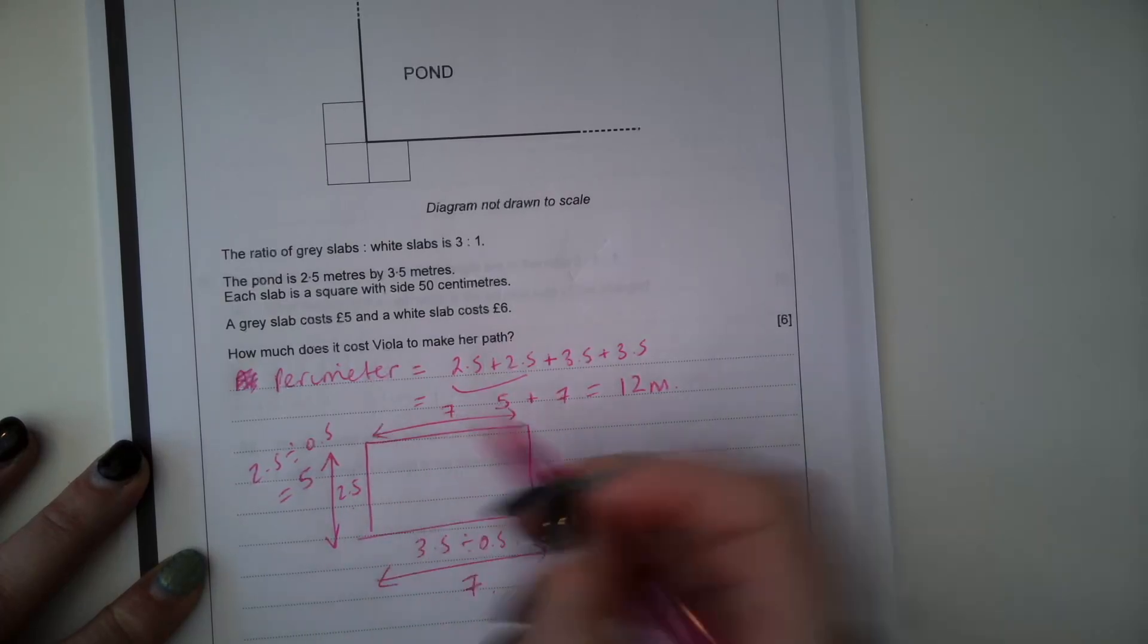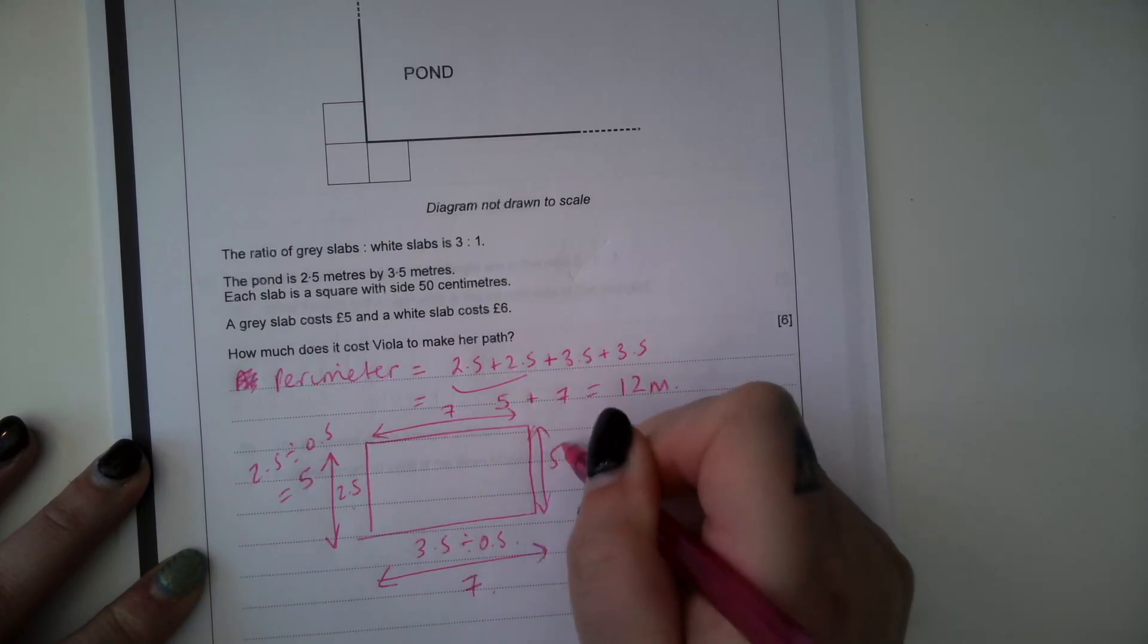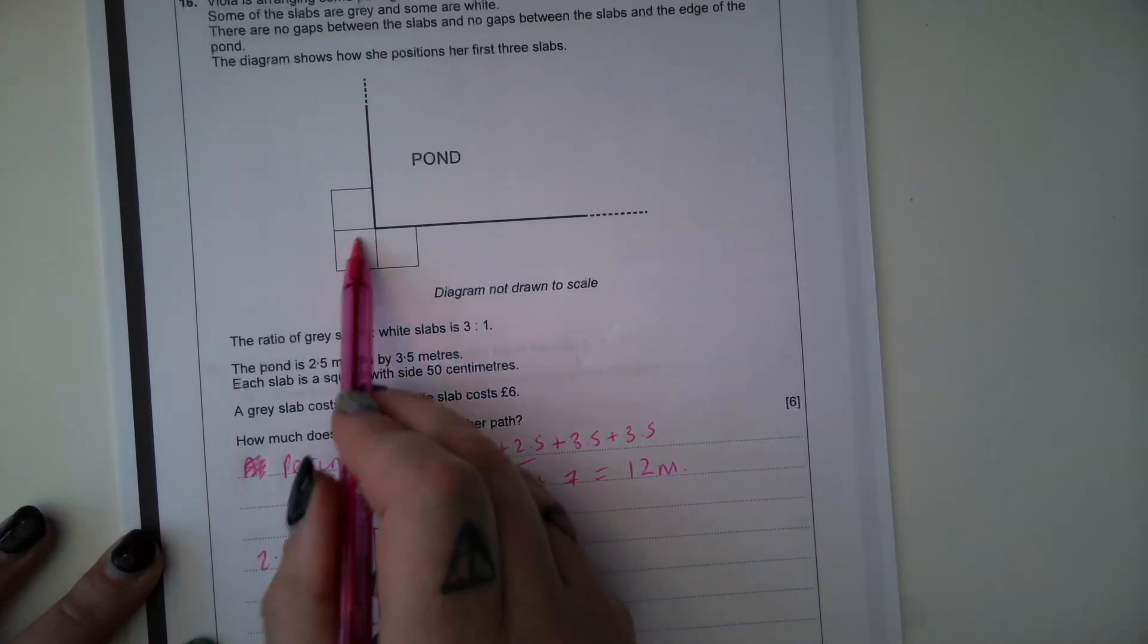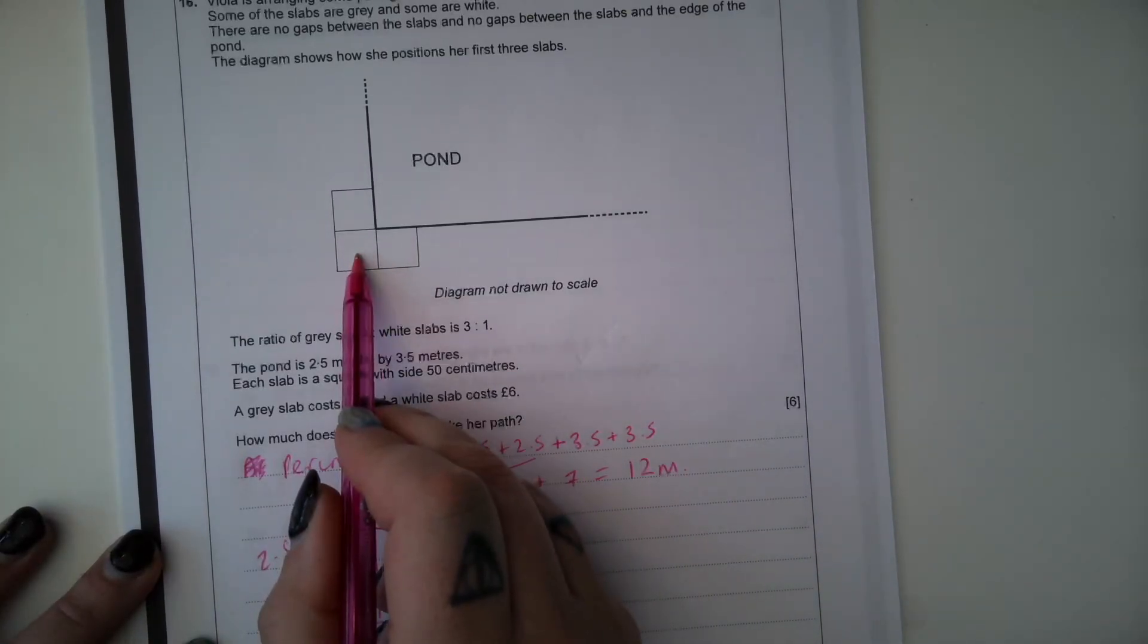So then we'd have 7 slabs, 5 slabs. But what we need to remember is this extra corner slab here isn't flush with the pond.